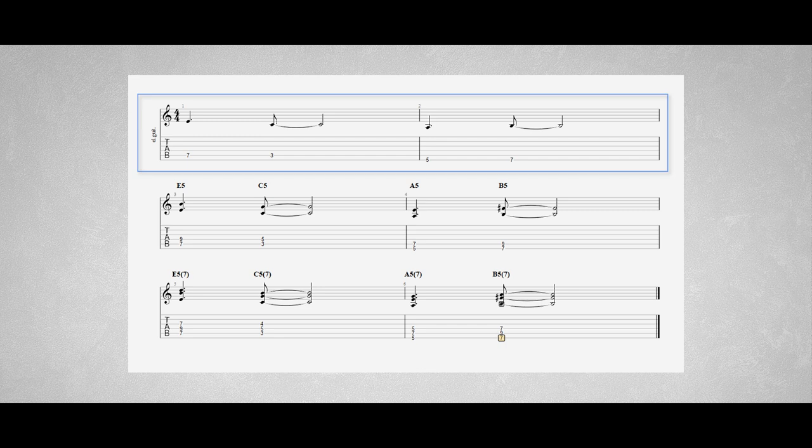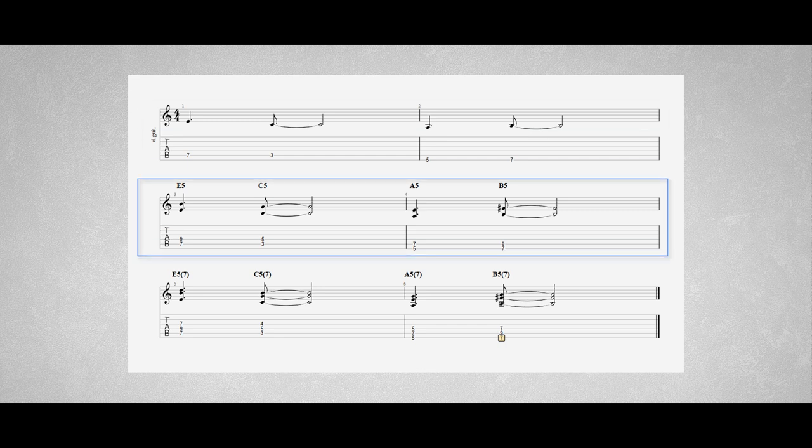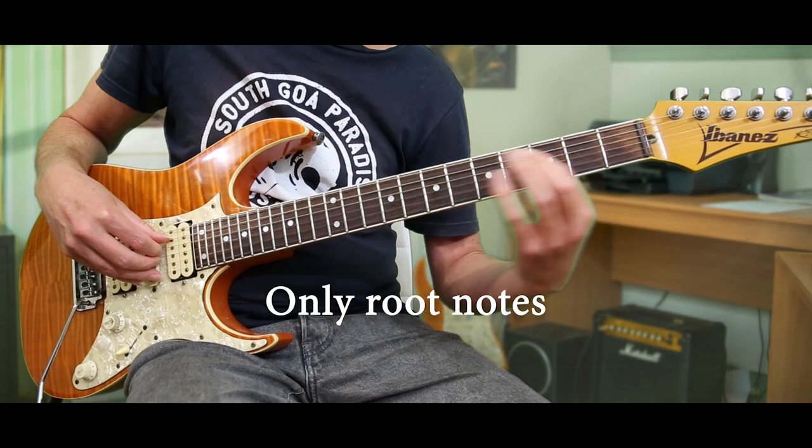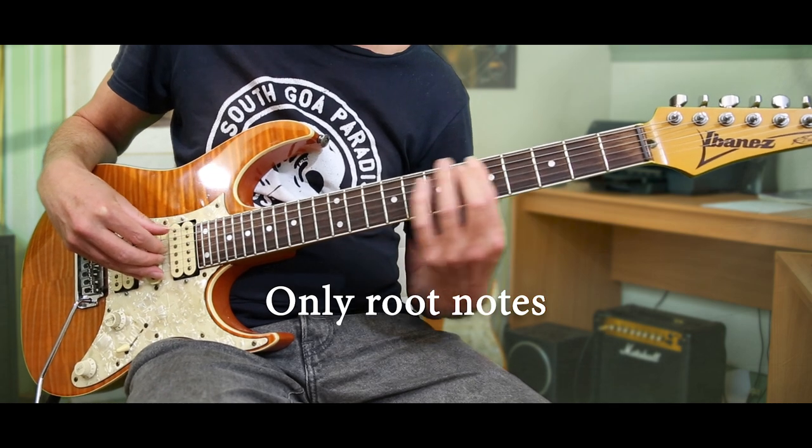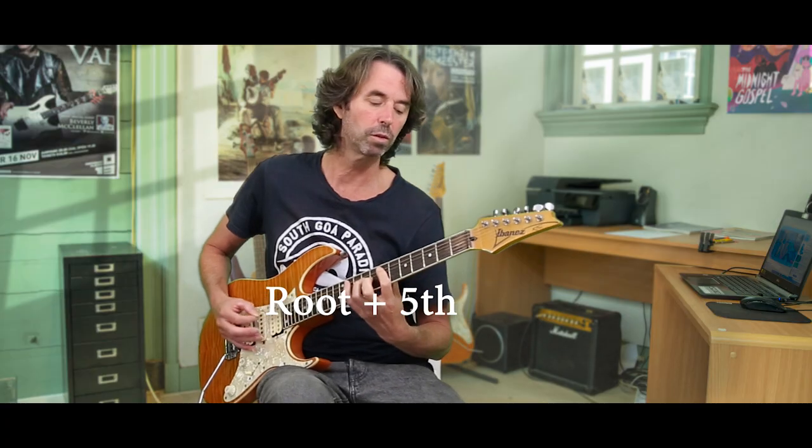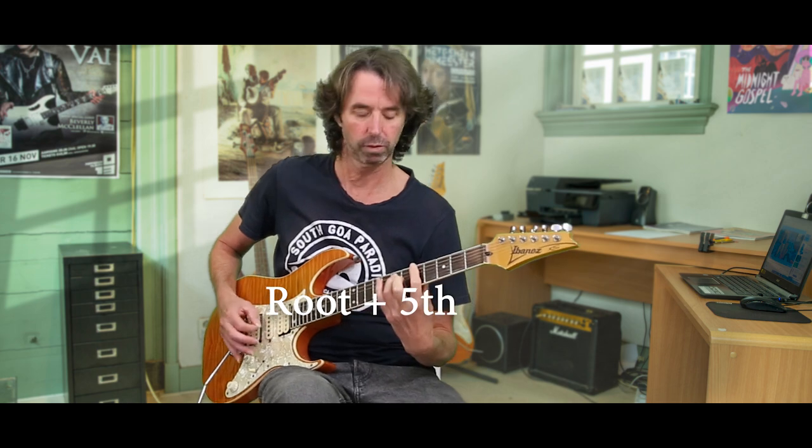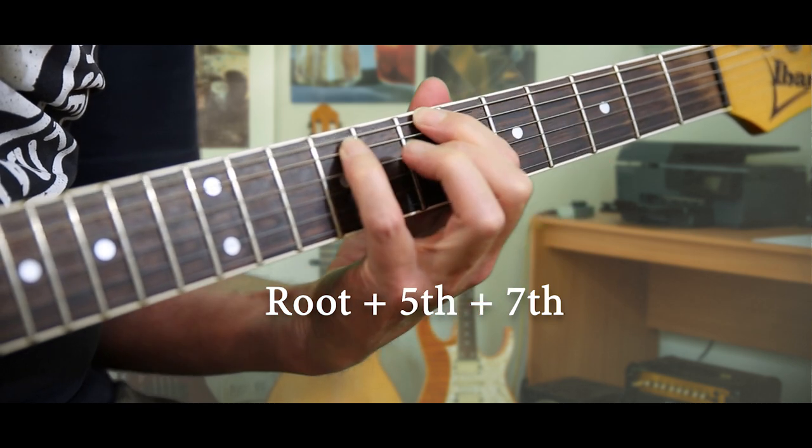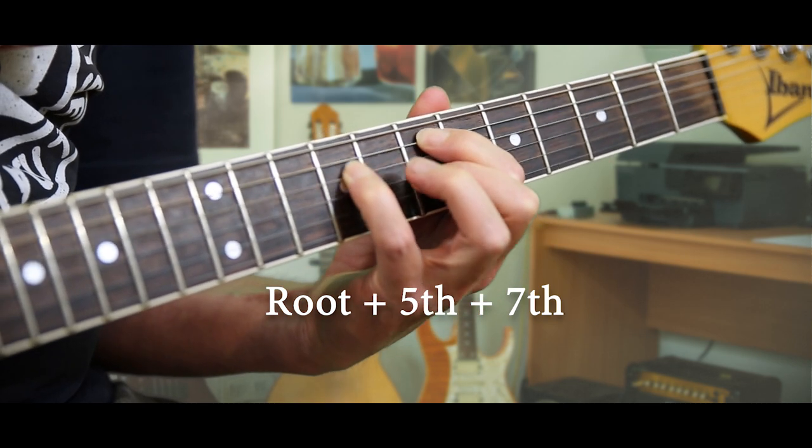First only the root notes, then it will thicken by addition of the fifth, and finally it colors by the addition of the seventh. The dissonance of the seventh in combination with the distortion will make the riff much more aggressive and energetic.